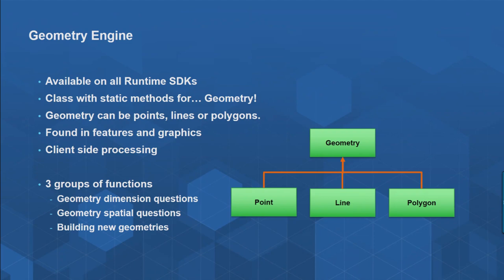The Geometry Engine, if you open it up, has several dozen methods. In order to break this down, I've grouped these areas of functionality into three different function groups. The first is where you can answer geometry dimension questions, then I'll talk about geometry spatial questions, and finally a group of methods which enable us to create new geometries.